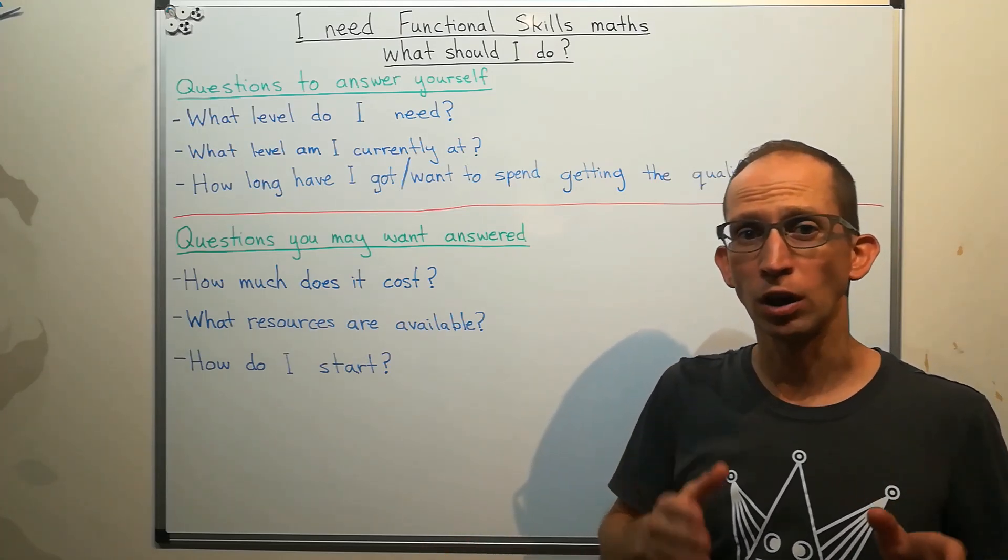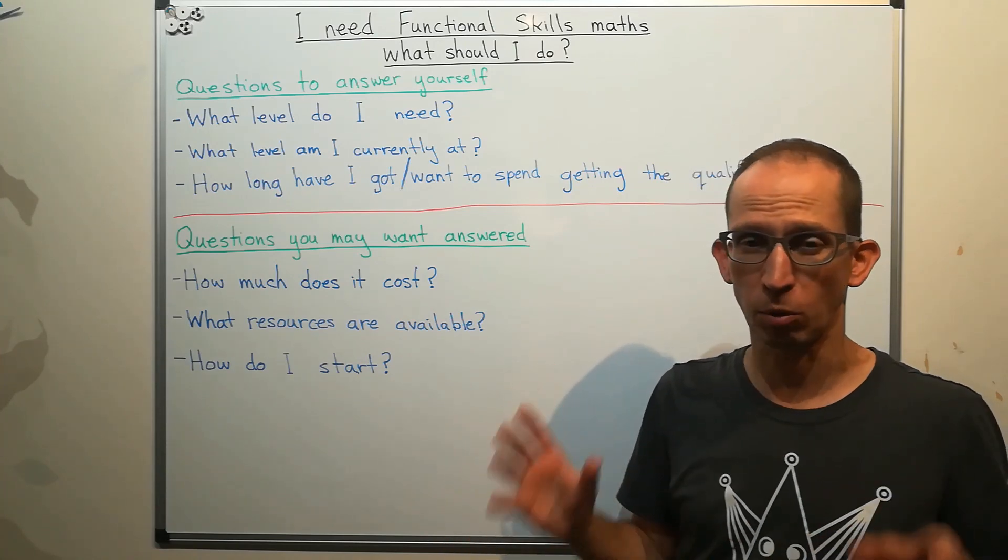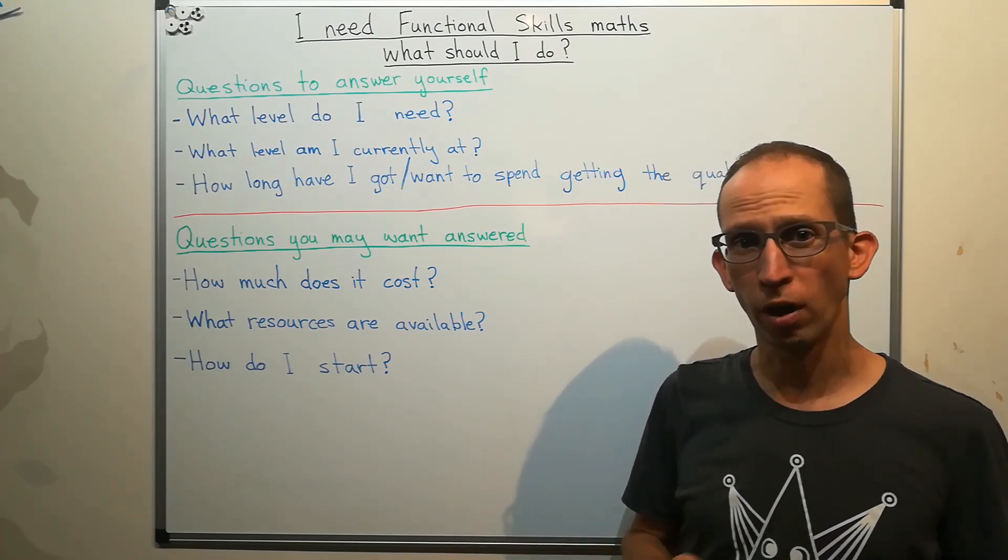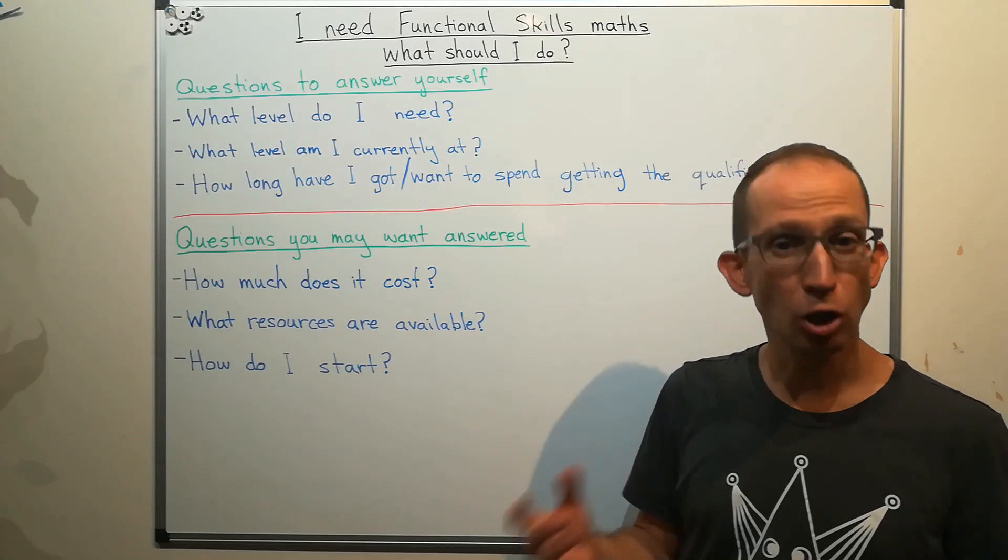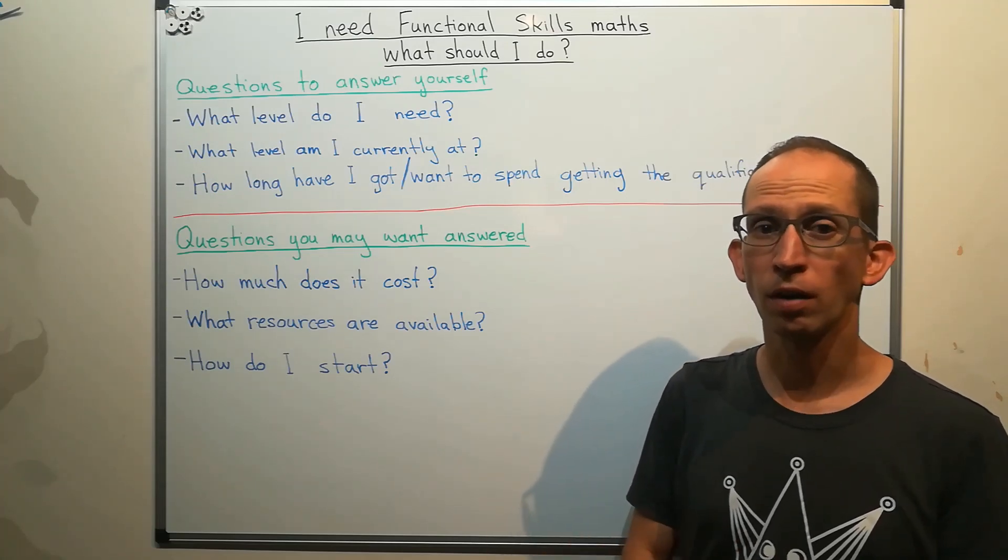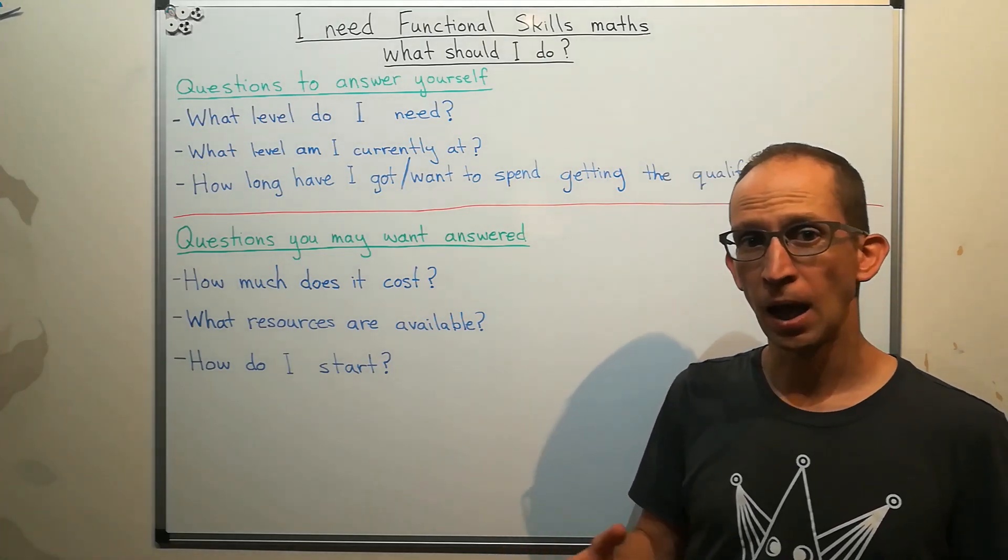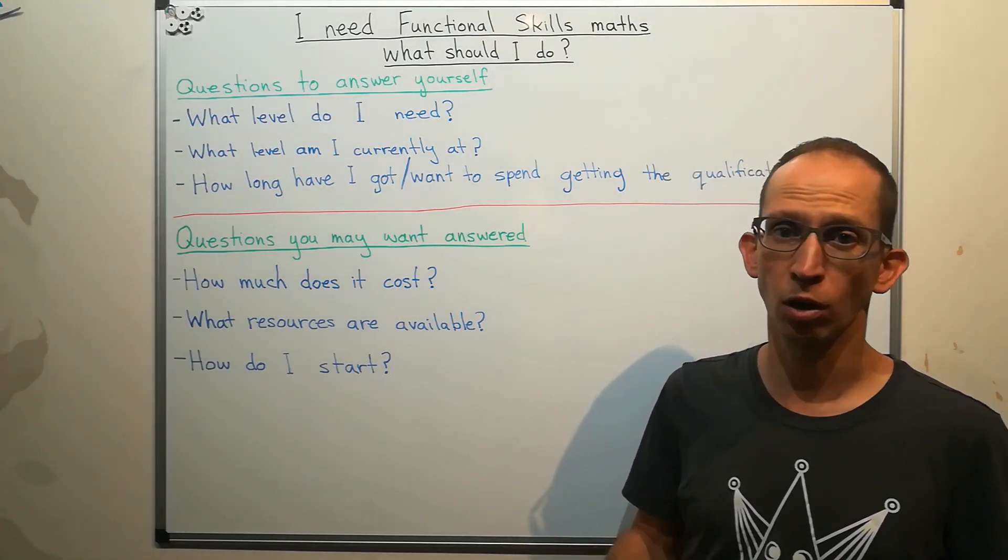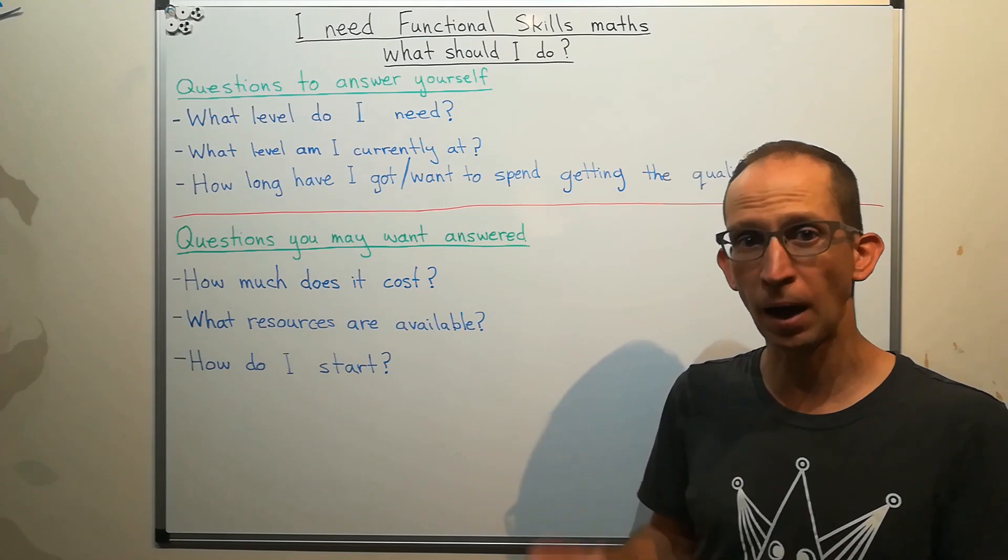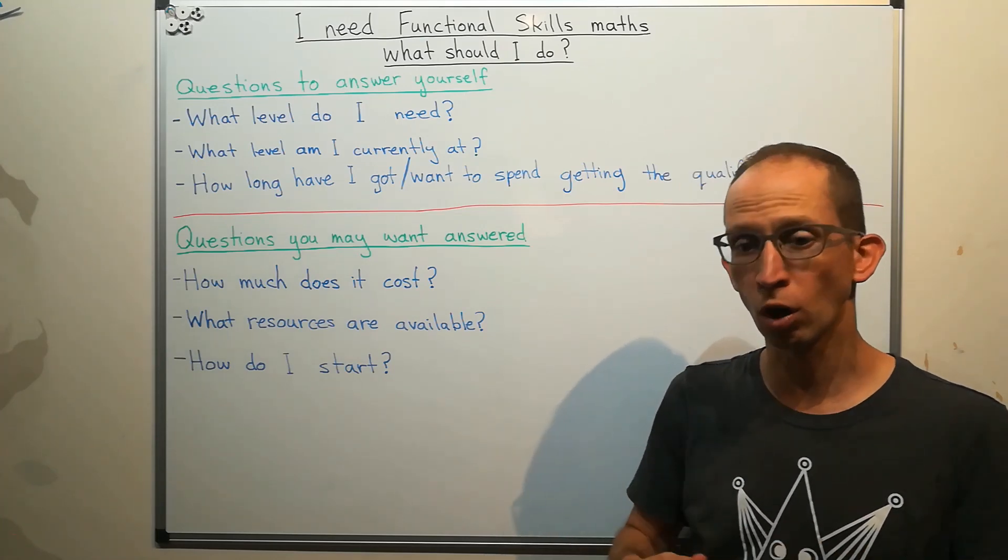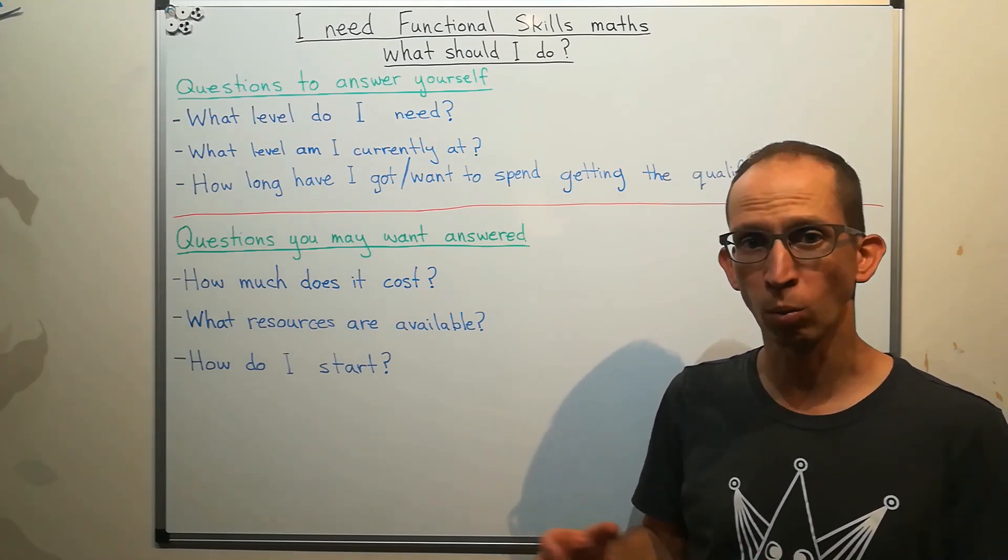So you could argue that the level of maths required for functional skills level two is very similar to what you would need to get maybe a grade three or four in a GCSE, but they are not the same. So if a course needs you to do GCSE, you need to have GCSE. Functional skills level two maths is not going to help. So that's a good thing to start off. Make sure you know what you actually need. And if you're looking at different colleges, even if it's been the same courses, look what their individual requirements are. If it is that you need GCSE maths, then functional skills maths can still be a good stepping stone to get you there and get a good qualification along the way as well.